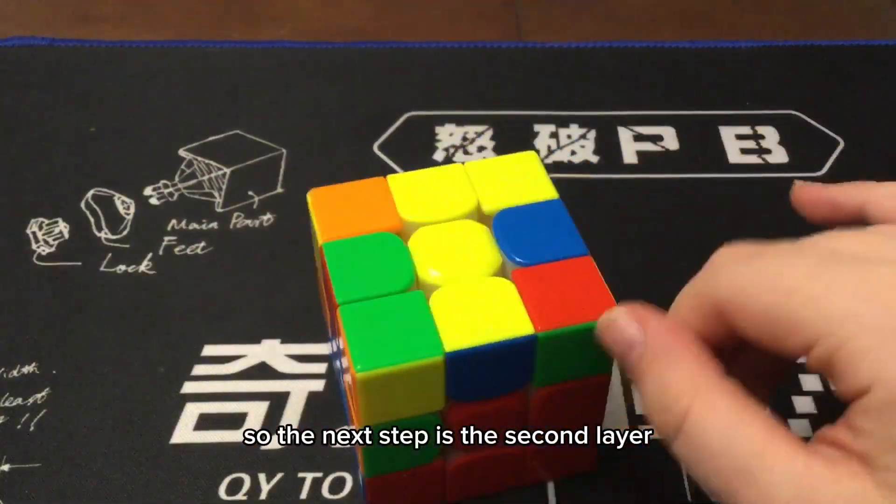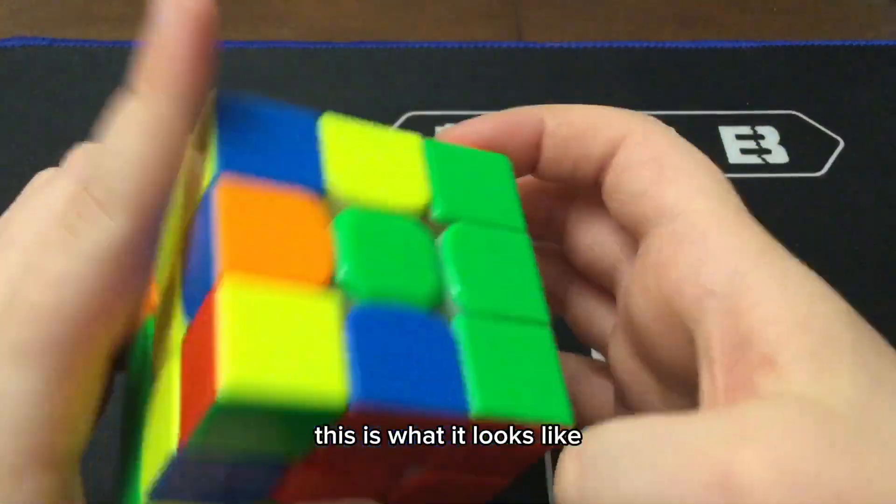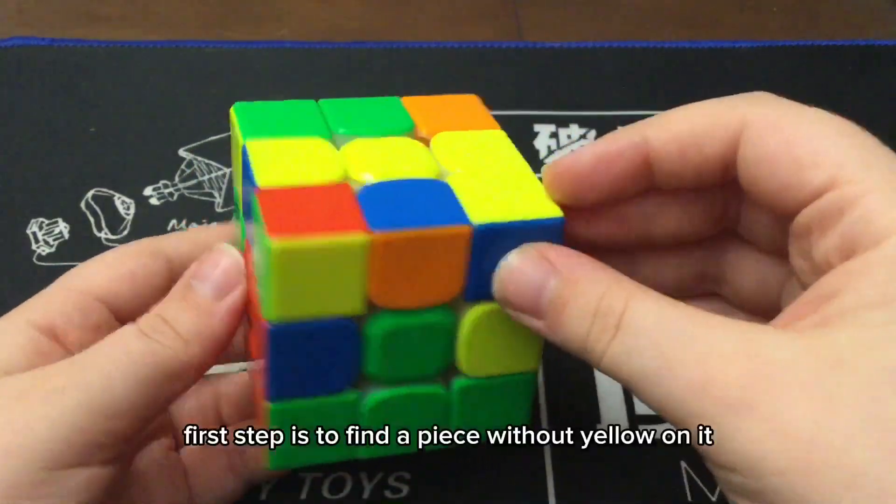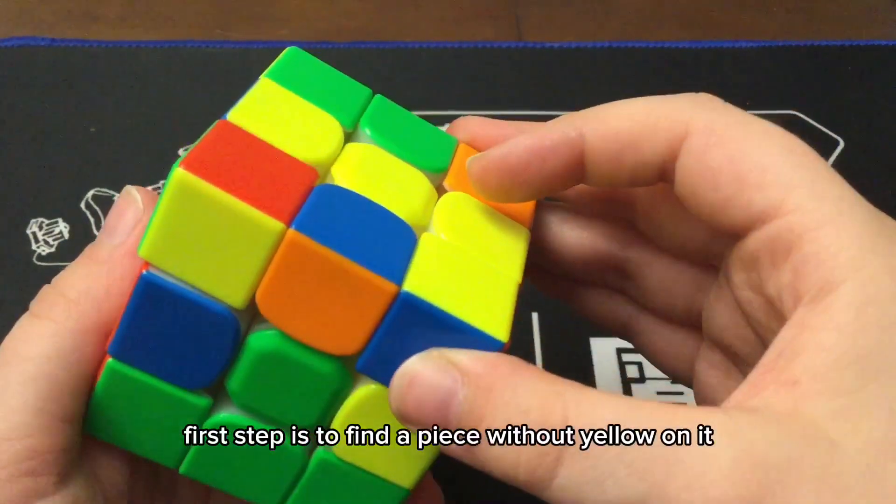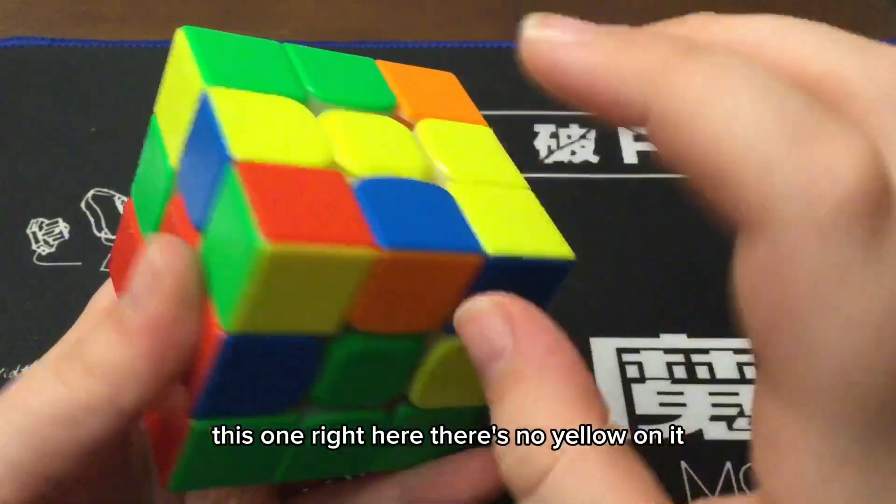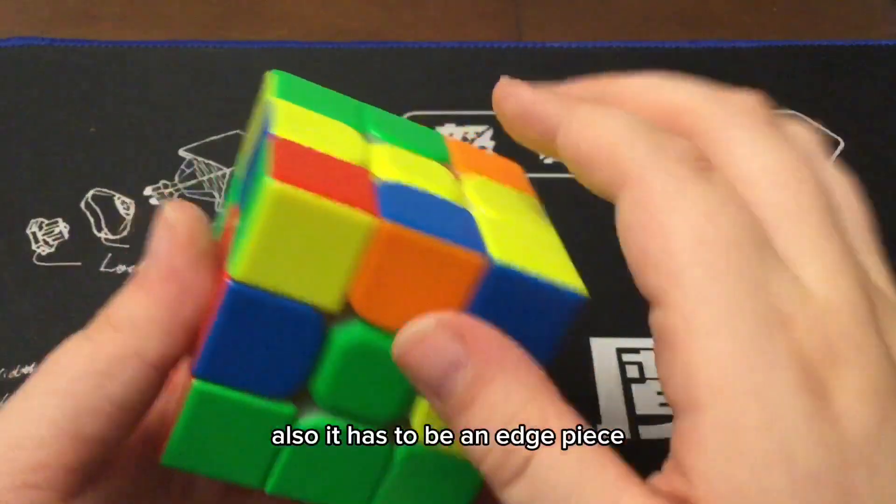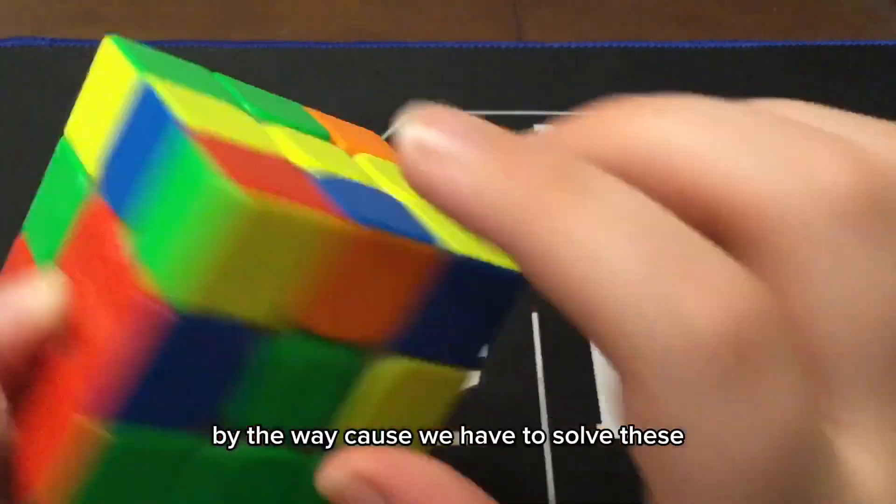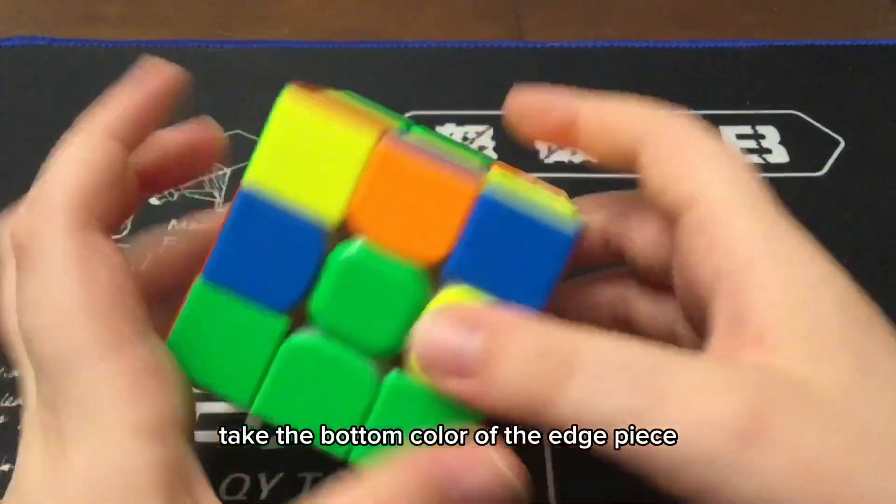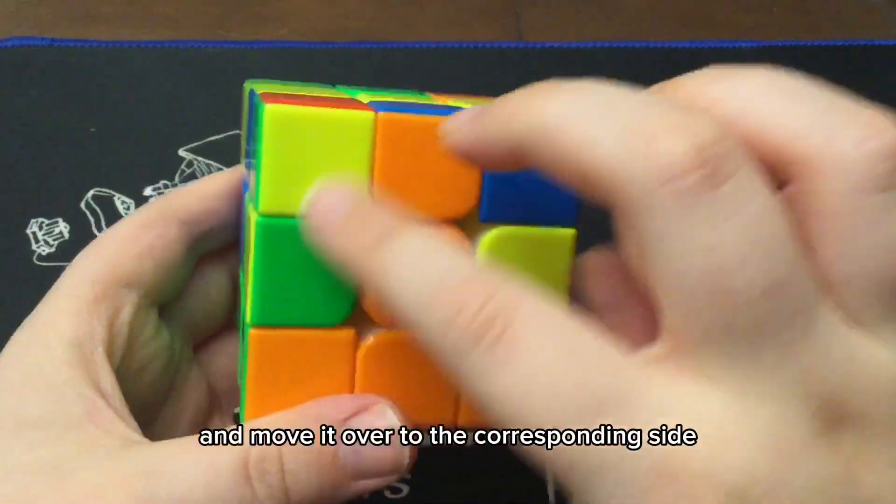So, the next step is the second layer. We did the first layer already. This is what it looks like, but now we have to do the second layer. First step is to find a piece without yellow on it. This one, right here, there's no yellow on it, you see? Also, it has to be an edge piece, by the way, because we have to solve these. So, basically, if it's this, take the bottom color of the edge piece and move it over to the corresponding side.